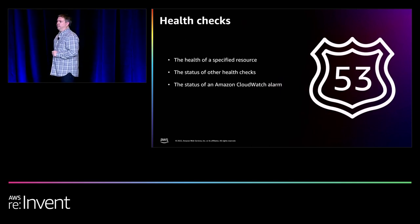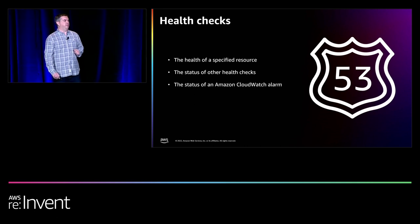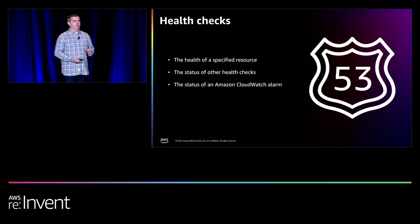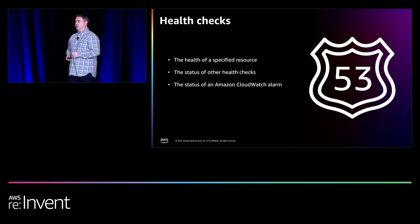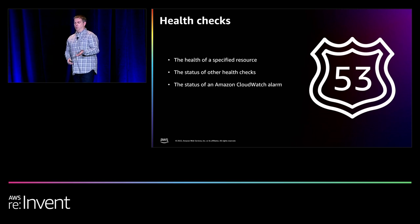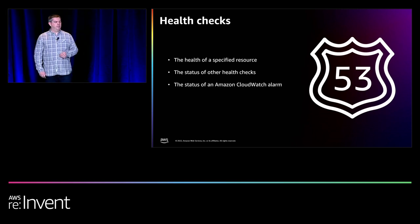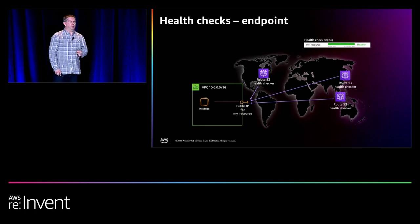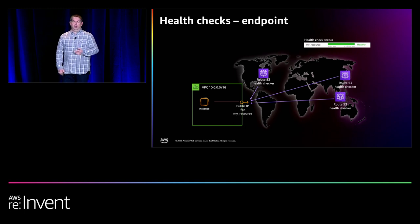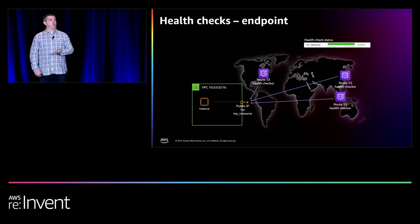Health checks are a really key capability of Route 53 because this is what lets you dynamically change entries in a Route 53 zone based on something else — like whether a website is responding, a server is up, or a load balancer is available. If it is, you return one entry. If it isn't, perhaps you want to do something else. We can check an endpoint directly — Route 53 can ping the endpoint and say, are you available? If so, we respond with a particular entry; if not, we respond with something else.